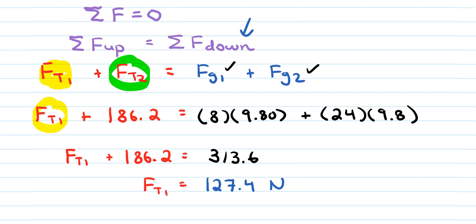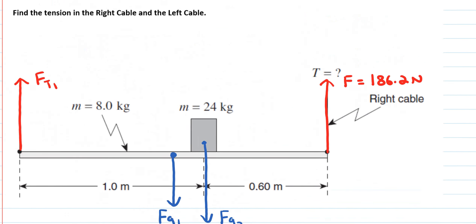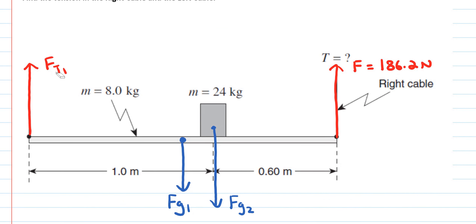Going back to the original diagram, the tension in the left-hand cable is 127.4 Newtons. This ensures the forces in the upward direction equal the forces in the downward direction. We've now completed both the rotational and translational equilibrium concepts to solve this problem.